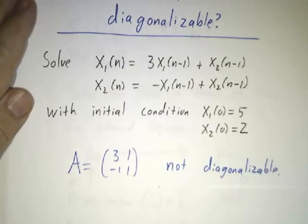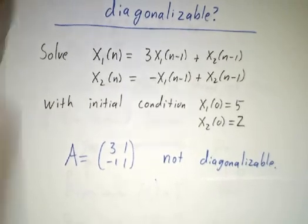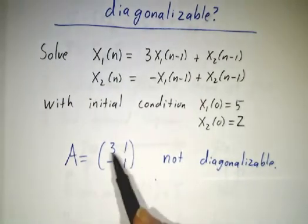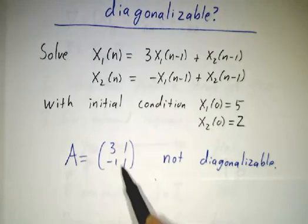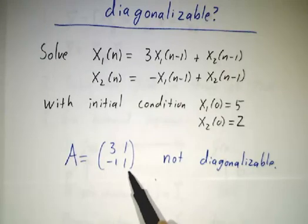So as I said, our matrix is not diagonalizable. You can see that the columns add up to 2, so 2 has to be an eigenvalue. The trace is 4, so the other eigenvalue has to be 2.